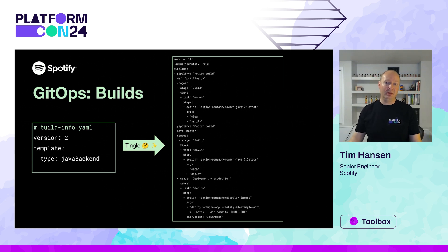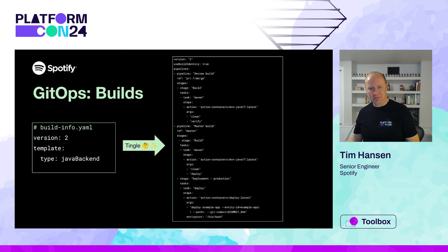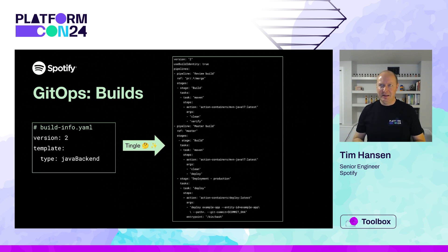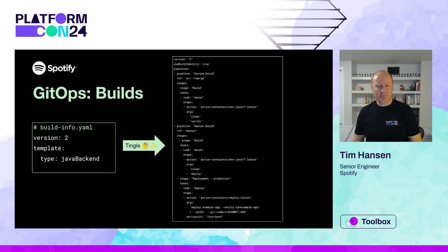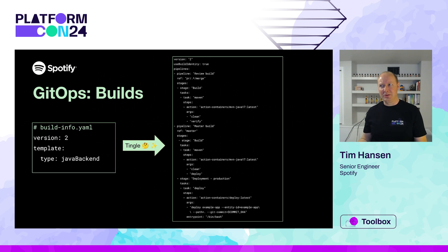Instead of that big pipeline definition getting copied around, we created build templates. This tiny file is what you typically see for a microservice. This template is translated by our build system into a bigger standard definition for Java backends. We have similar templates for websites, Python backends, and streaming pipelines. This is another superpower of GitOps — abstraction and simplification. By using GitOps and standard tech stacks, we can make builds absolutely brainless for developers. For software that truly needs a custom build, the full pipeline language is always available, but for most of our components, the template is just fine.